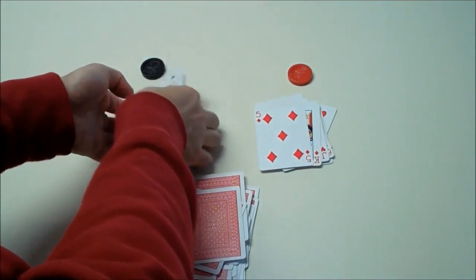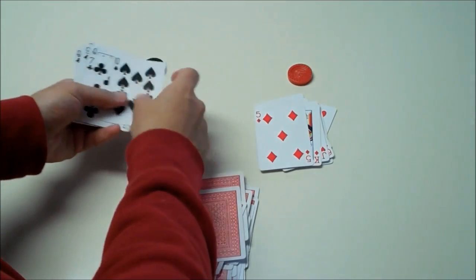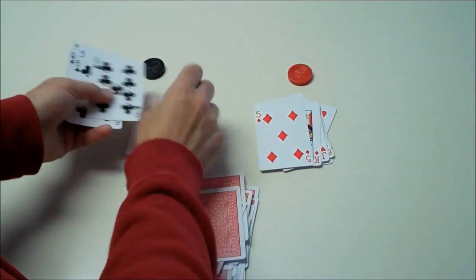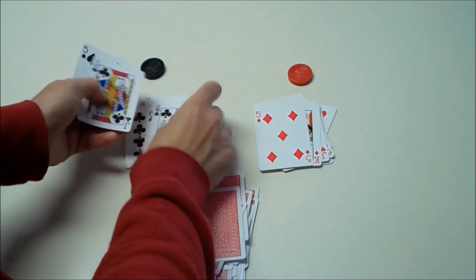Let's see how many are in the black pile. 1, 2, 3, 4, 5, 6, 7, 8, 9, 10, 11, 12.